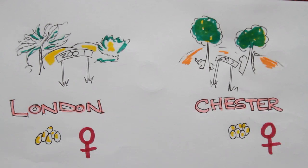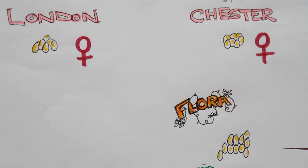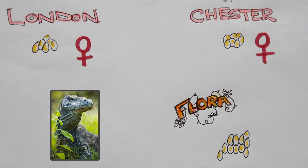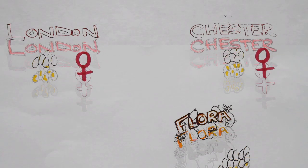Back in 2006 it was reported that a Komodo dragon named Flora from Chester Zoo had laid 11 eggs even though she had never been near a male, let alone bred with one in her life. Three of the eggs died off and were used to test genetics, while the other eight were developing. These offspring weren't exactly clones, but their genetic makeup derived solely from the female Komodo dragon Flora.